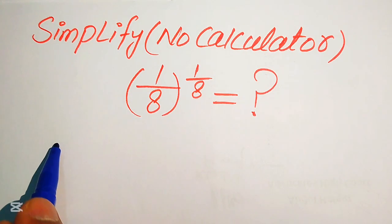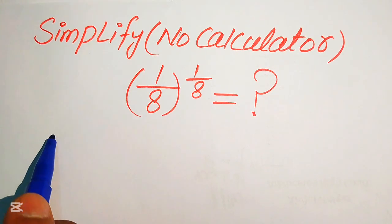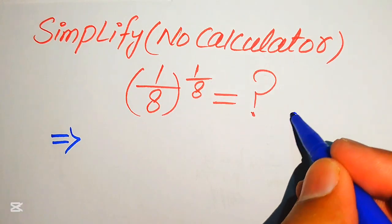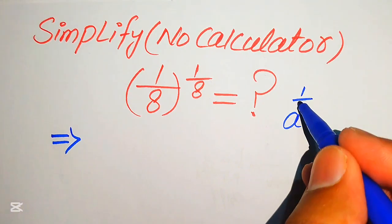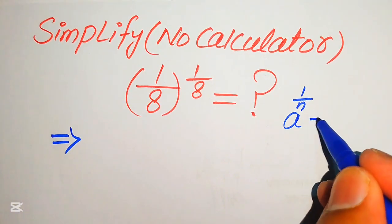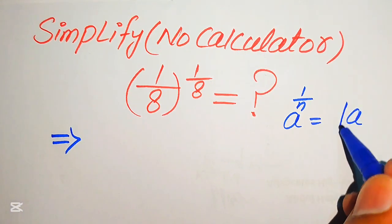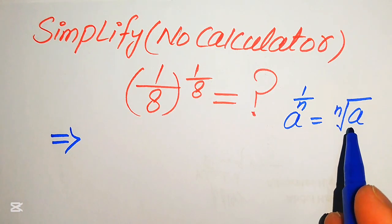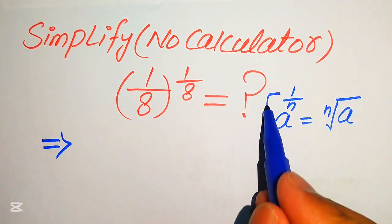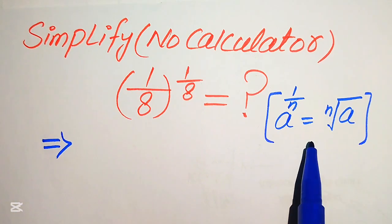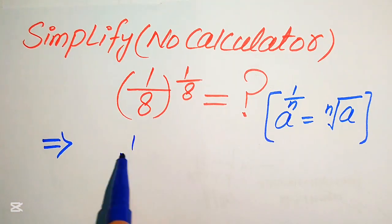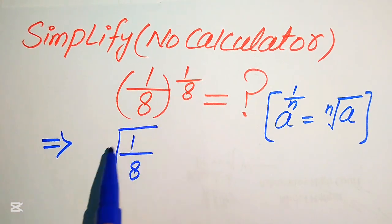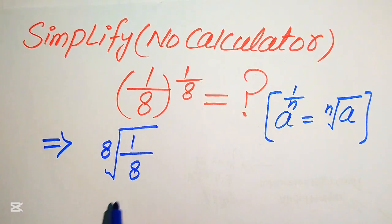In the first step, we need to write this exponential form into the radical form. We know that if you have a to the power of 1 over n, we write it as the nth root of a. So we write this exponential form into radical form using this law.